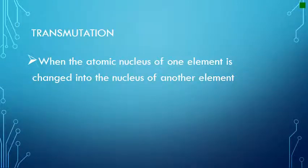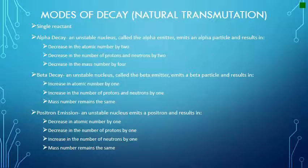One term you'll see a lot is transmutation — that is when the atomic nucleus of one element is changed into the nucleus of a different element. Natural transmutations have a single reactant, meaning the unstable nucleus emits a particle. Alpha and beta decay and positron emission are modes of decay in natural transmutations. Look at the slide and determine some of the properties of each type of decay.